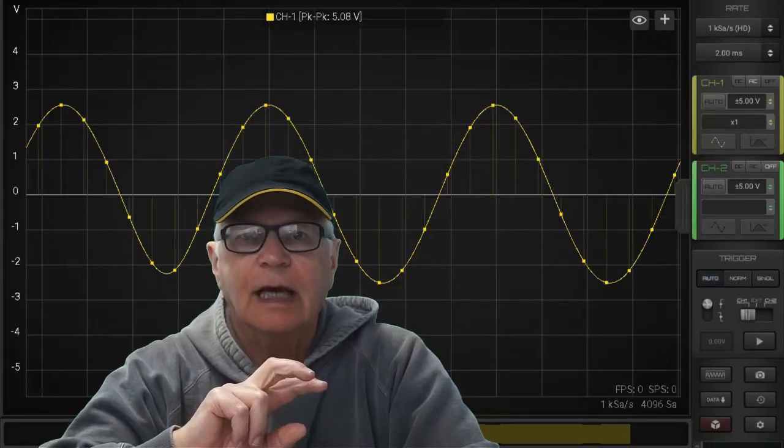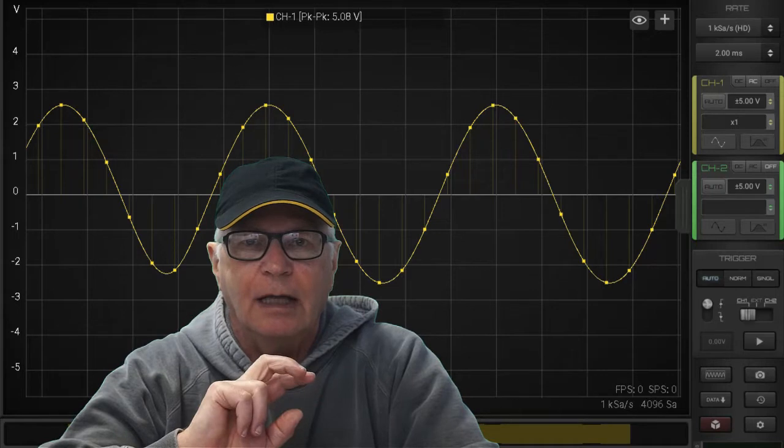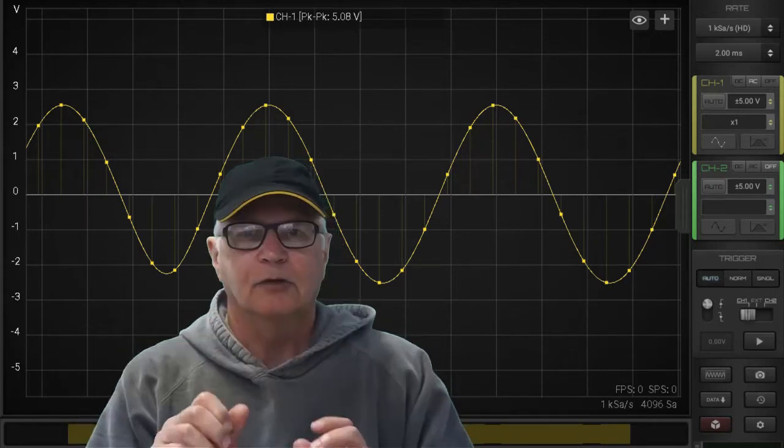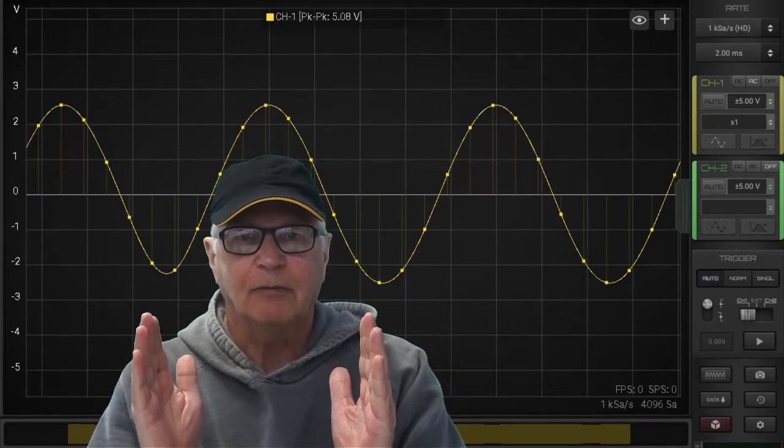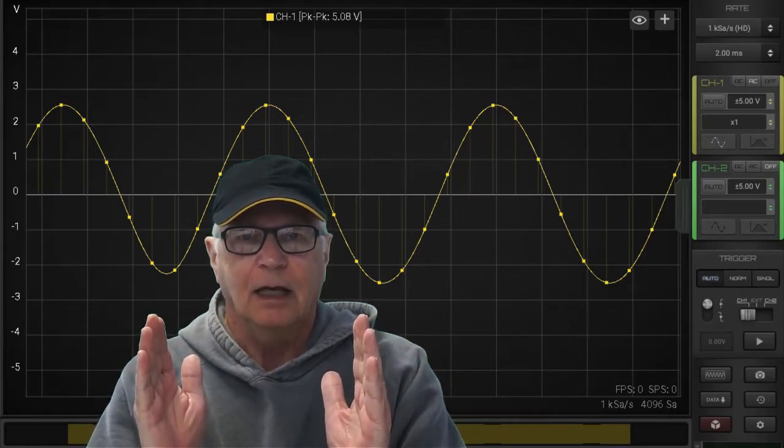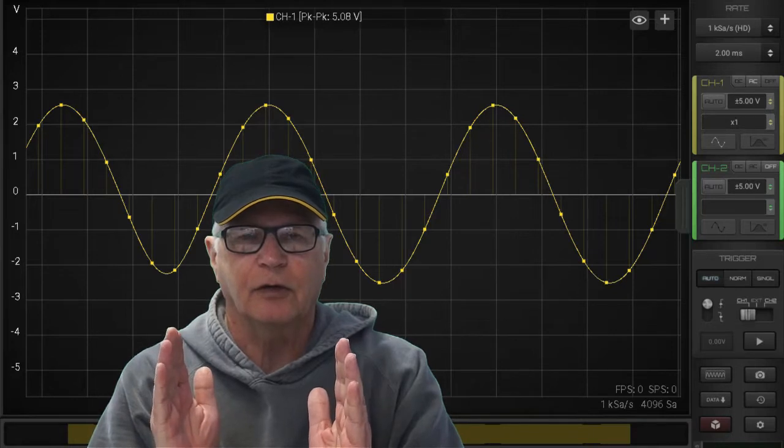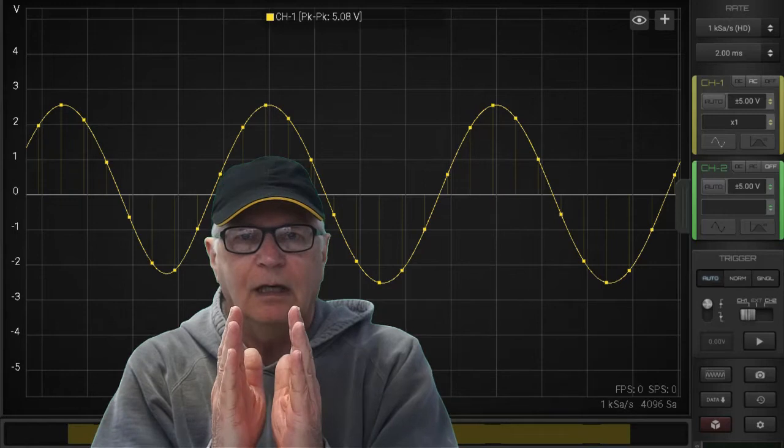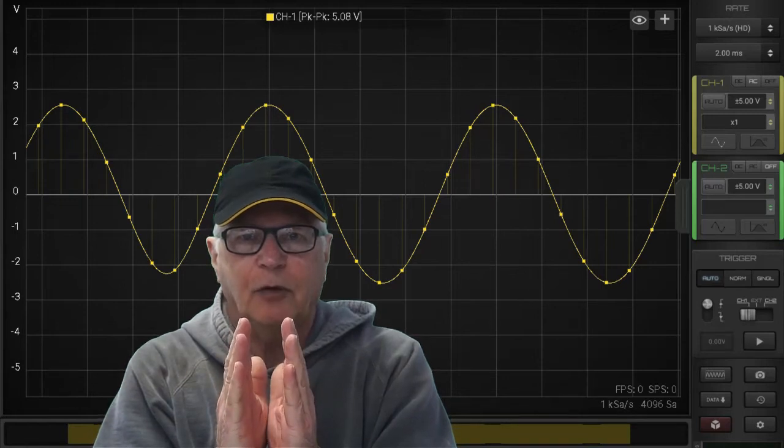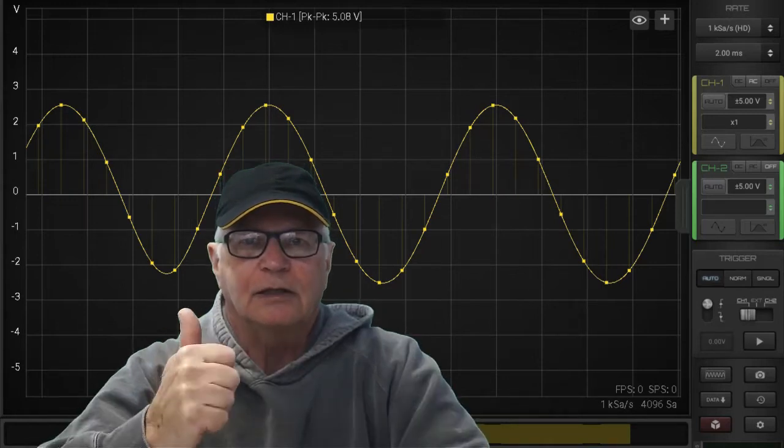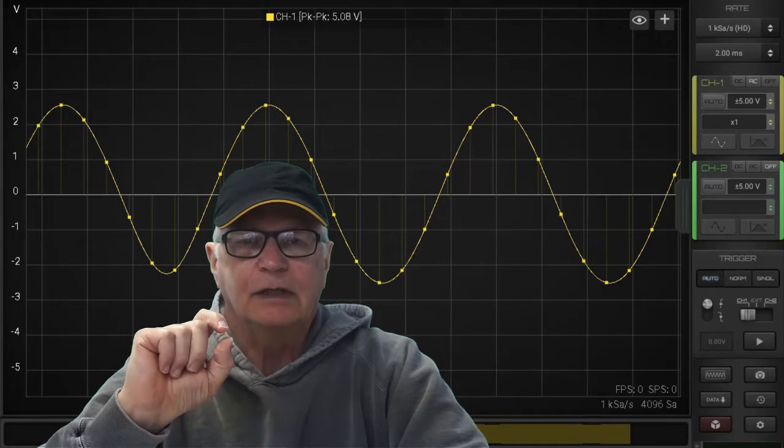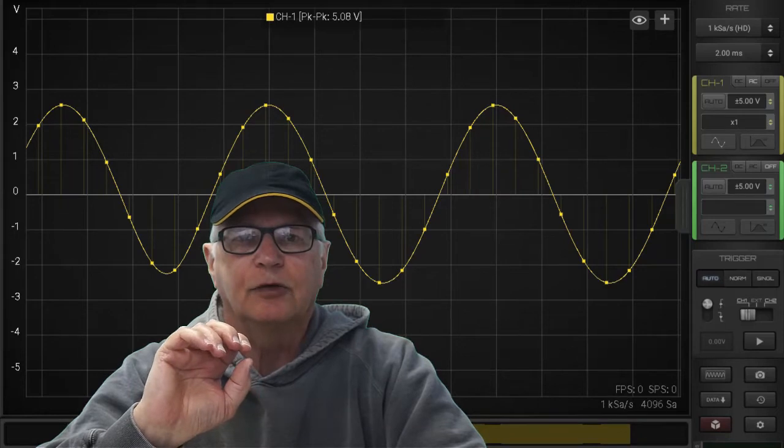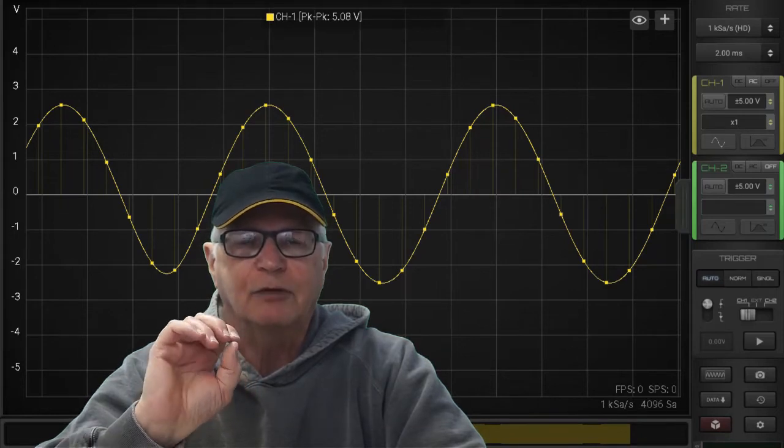We're looking at a 100 hertz sine wave here, and we're capturing it at one kilo sample per second sample rate. That means we have a thousand sample points in a second. With this 100 hertz sine wave, one period from crest to crest contains 10 sample points. That's a rule of thumb: 10 sample points in a period is considered the minimum to properly capture a waveform.